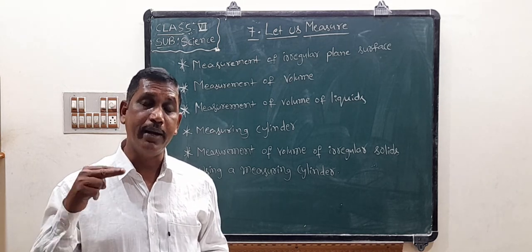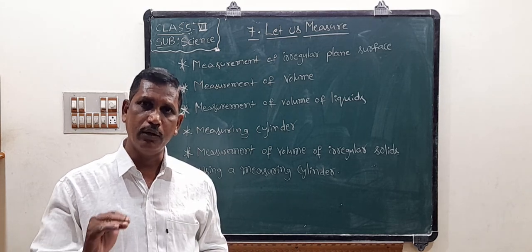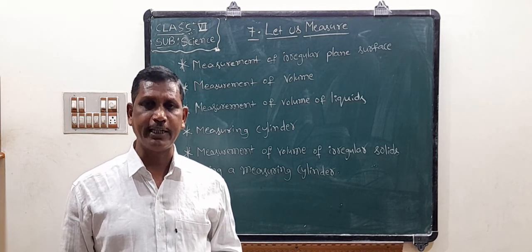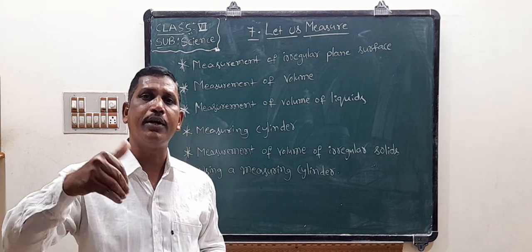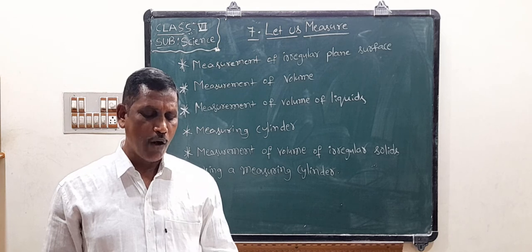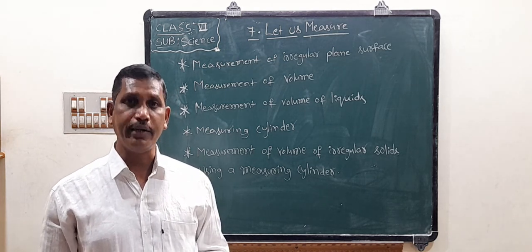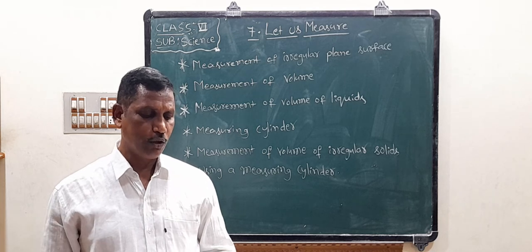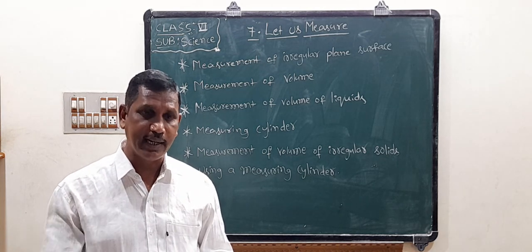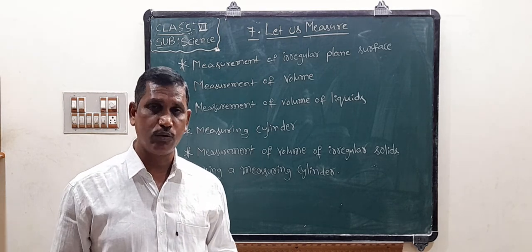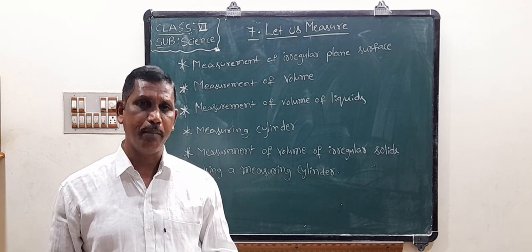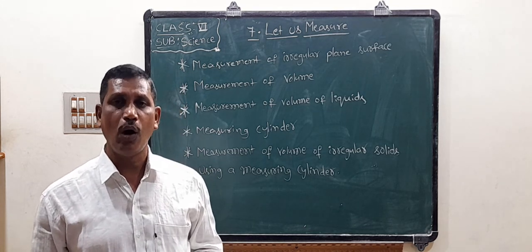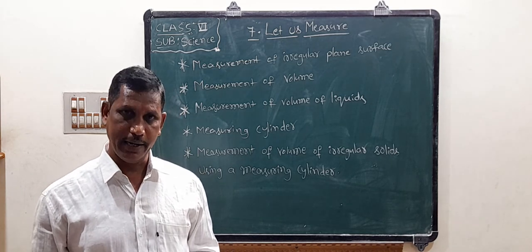The unit of volume in the CGS system is cubic centimeter, and in the MKS system it is cubic meter. For measurement of volume of liquids - how can you measure the volume of kerosene, petrol, diesel, or milk? We use measuring cylinders to measure the volume of liquids such as kerosene, milk, oil, water, etc. The volume of liquids is expressed in liters or milliliters.